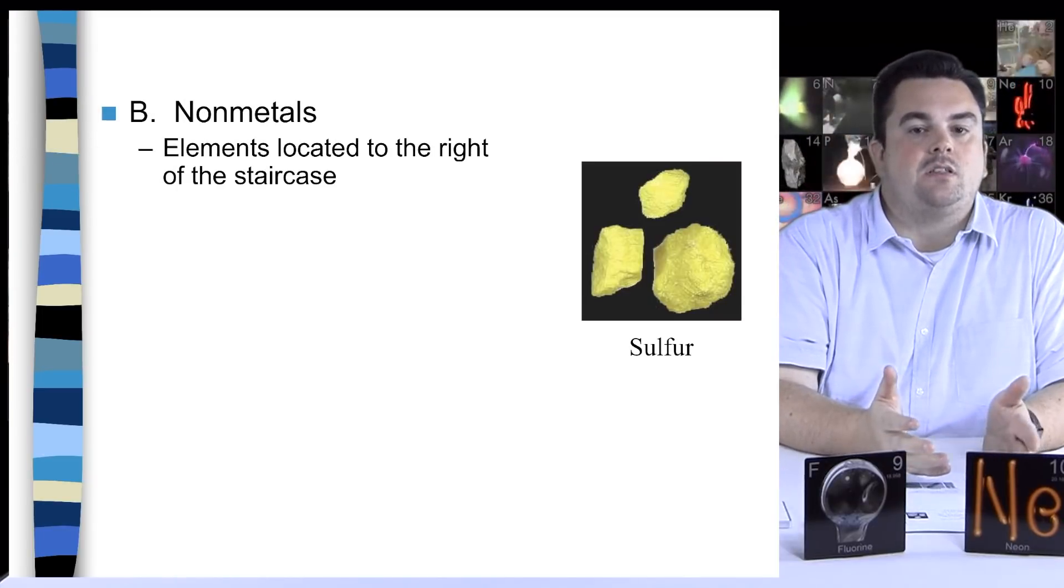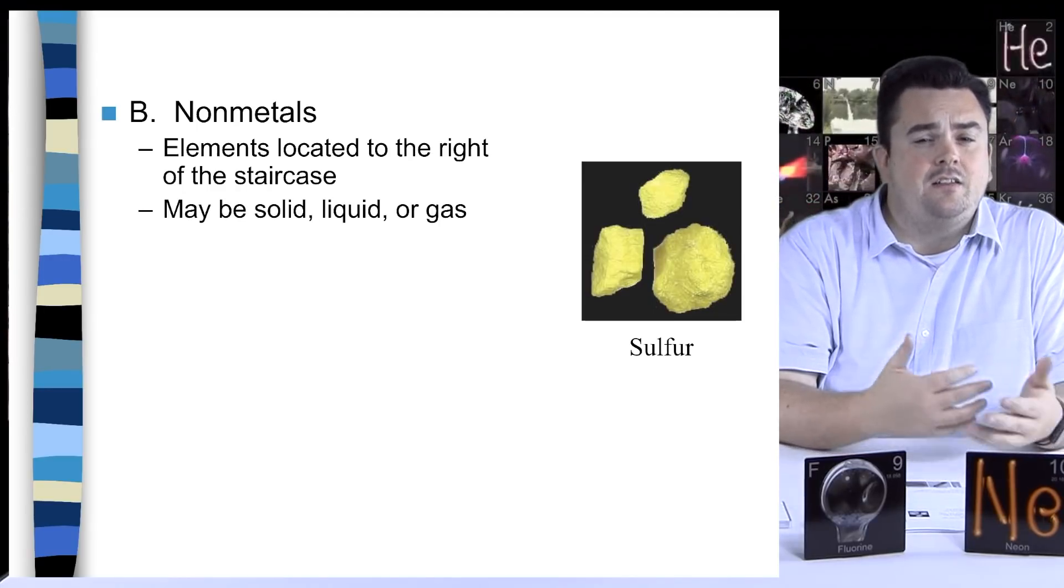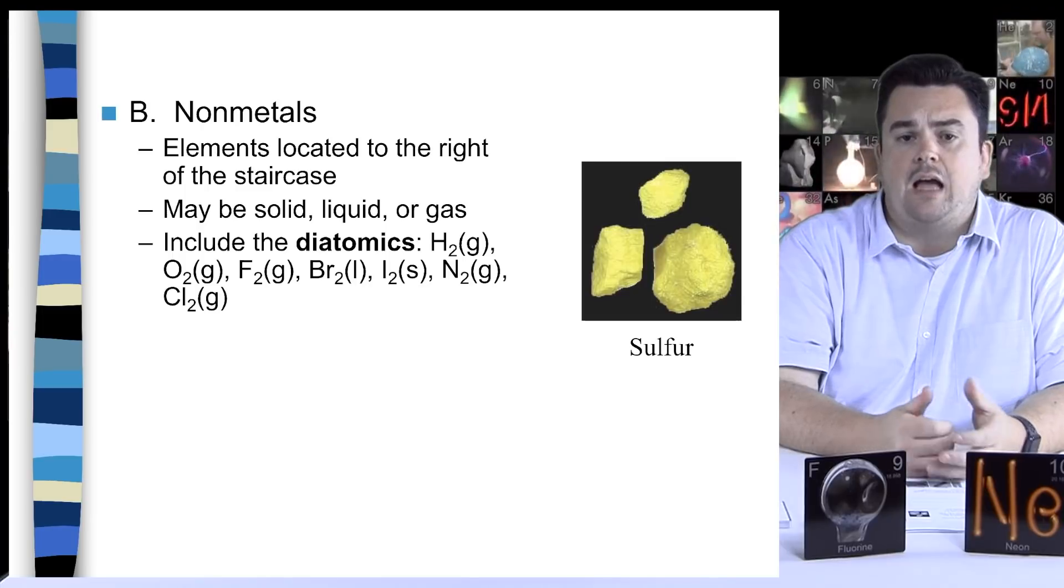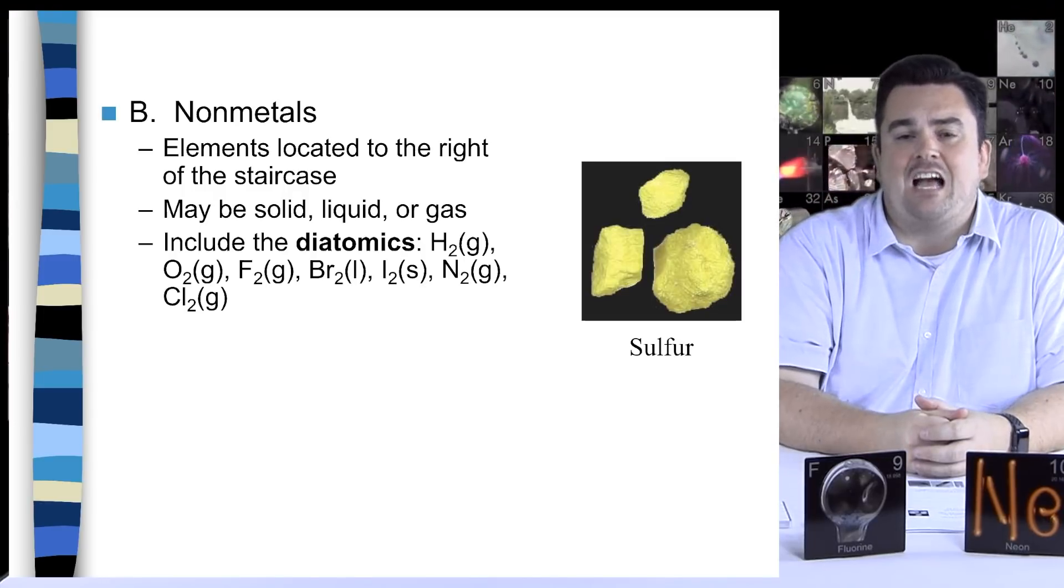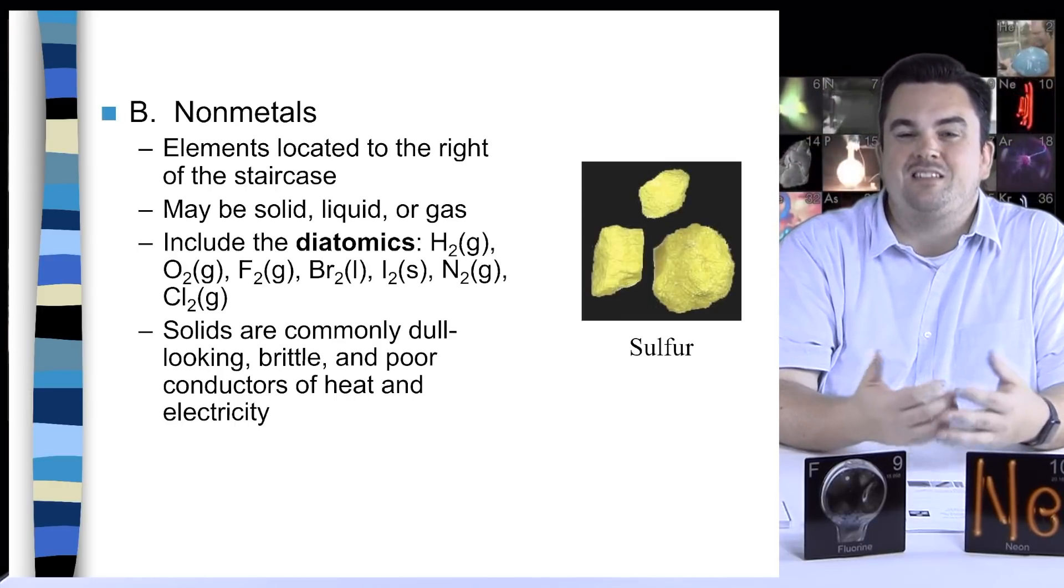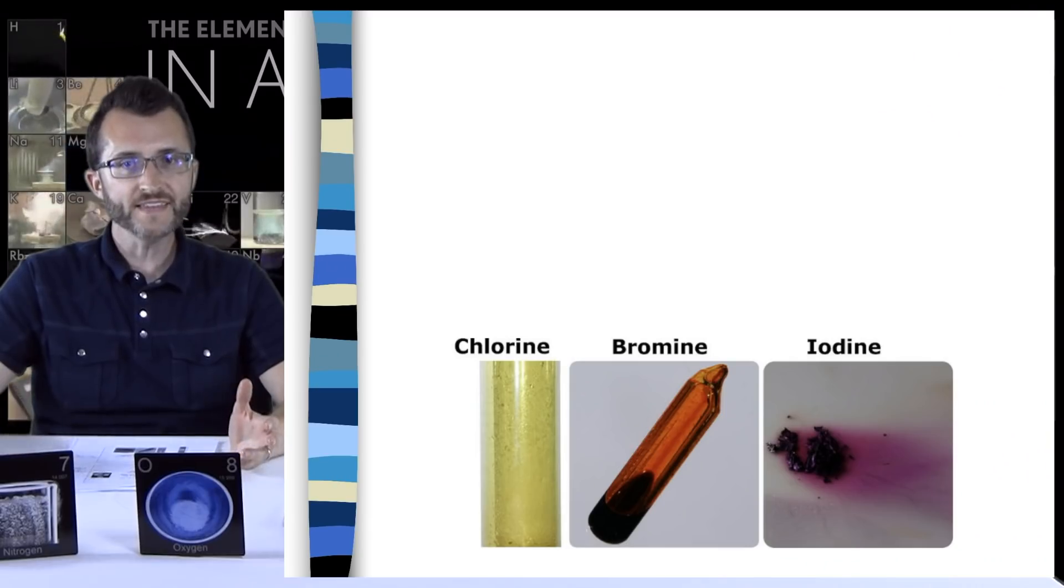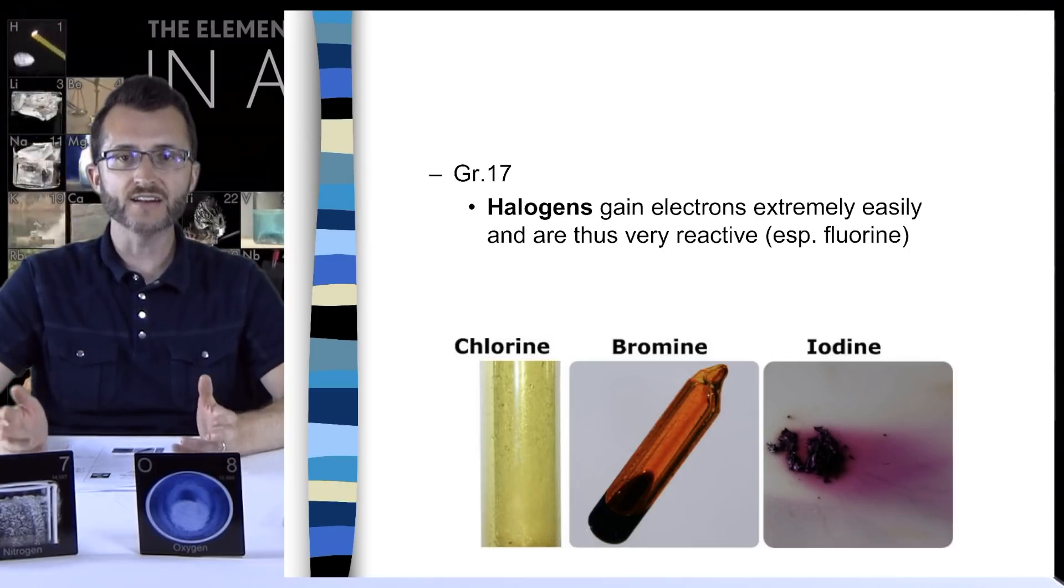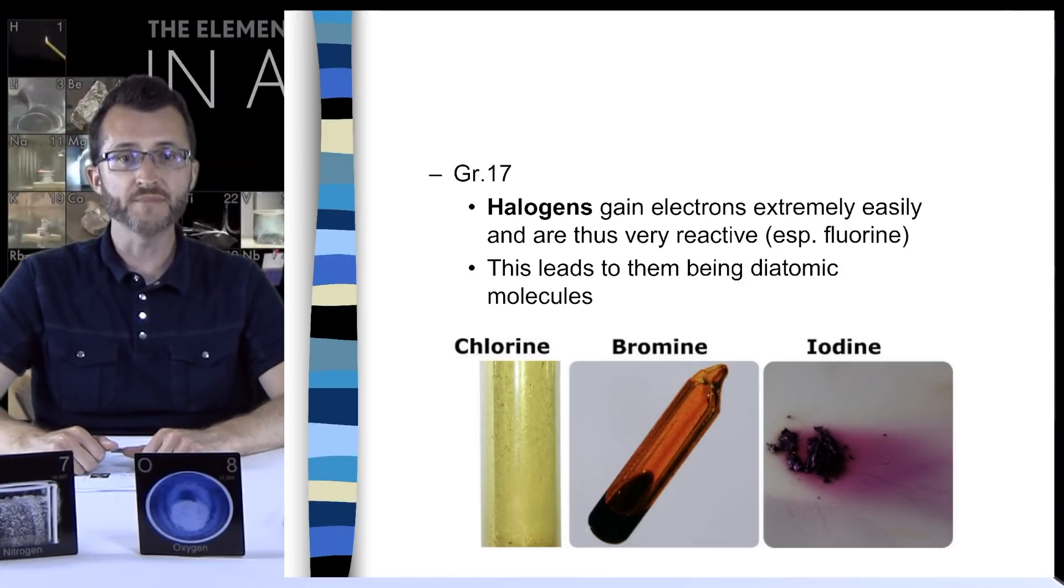Non-metals are the elements located to the right of the staircase. The staircase is in bold on your periodic table. They may be solid, liquid, or gas. They include the diatomics, which include hydrogen H2, O2, F2, Br2, I2, N2, and Cl2. Notice, even amongst the diatomics, all three phases are present. Solids are commonly dull-looking, not shiny. They're brittle, meaning they break into pieces, like peanut brittle. They're poor conductors of heat and electricity. Within the category of non-metals, there's a special group, group 17, called the halogens. Halogens gain electrons extremely easily and are thus very reactive, especially fluorine. This leads to them being diatomic molecules, as previously mentioned.